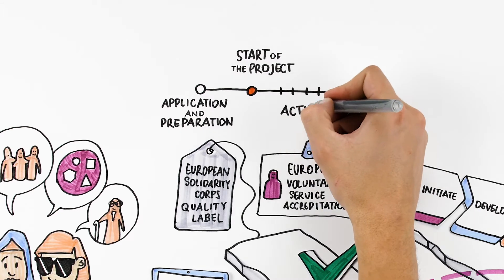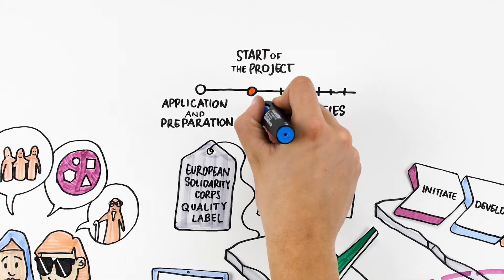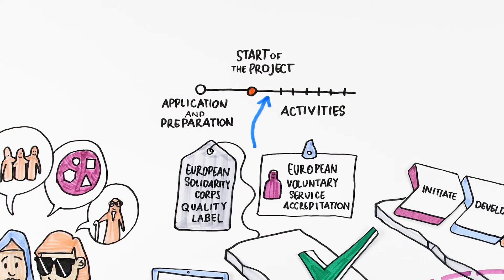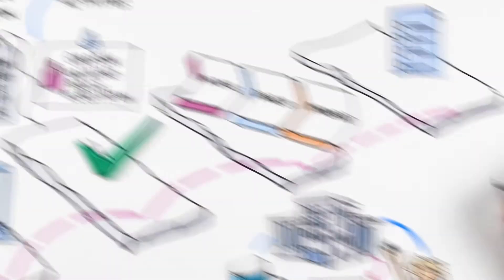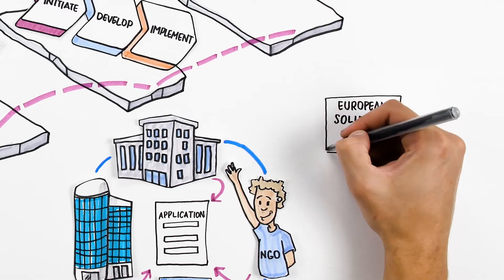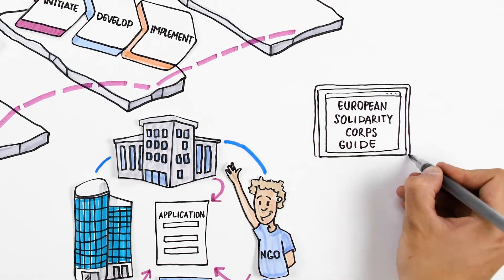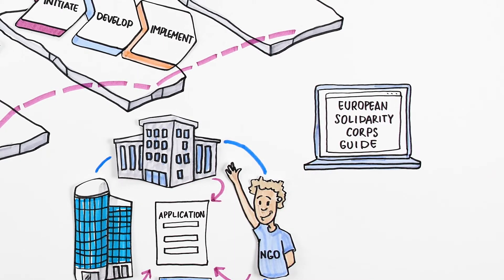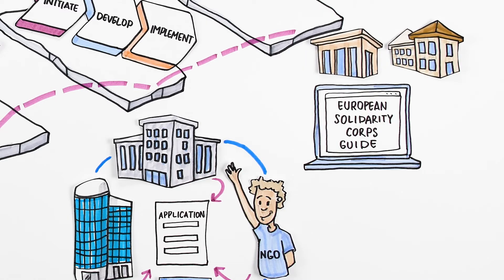Make sure that you and your partners are familiar with the formal eligibility criteria before you apply for a grant. You can find this information in the latest version of the European Solidarity Corps guide available from the official website of the European Commission and the agencies responsible for the management of the core program.